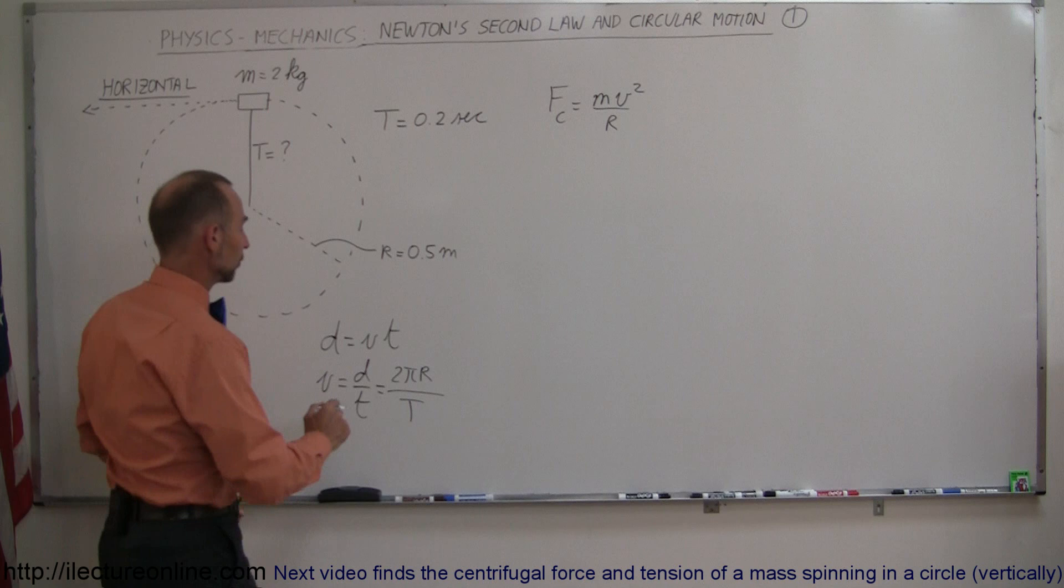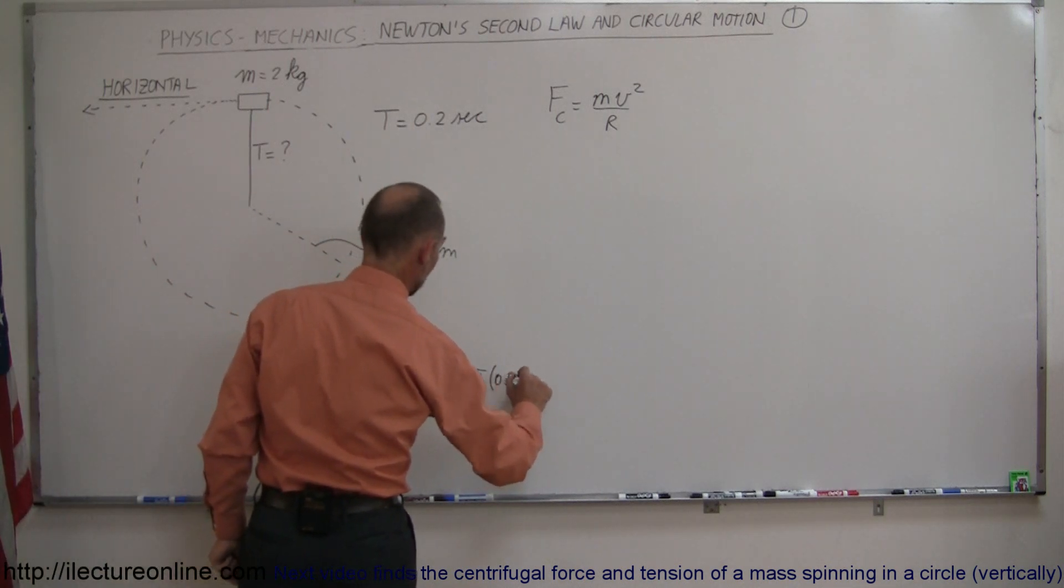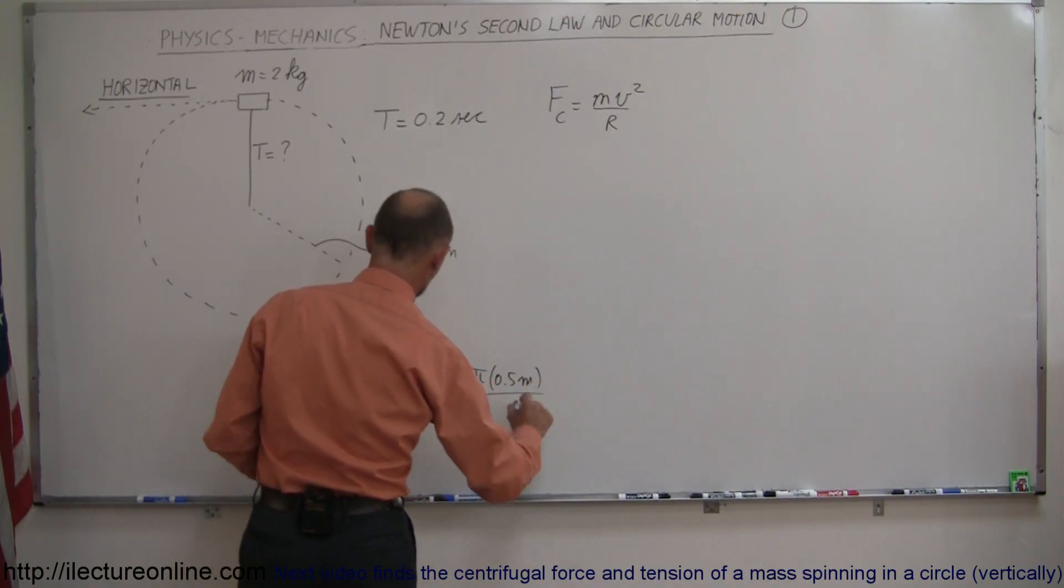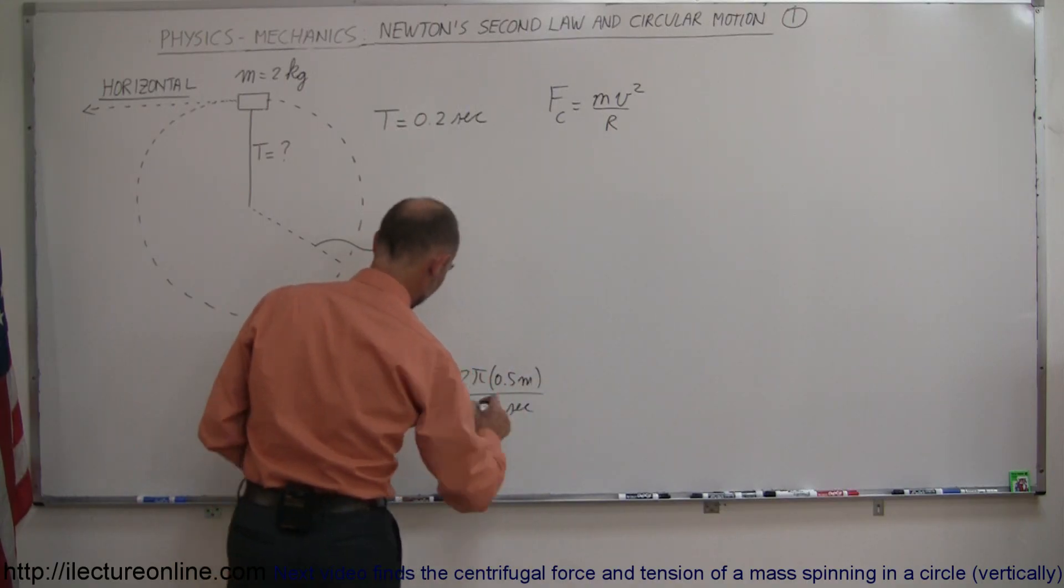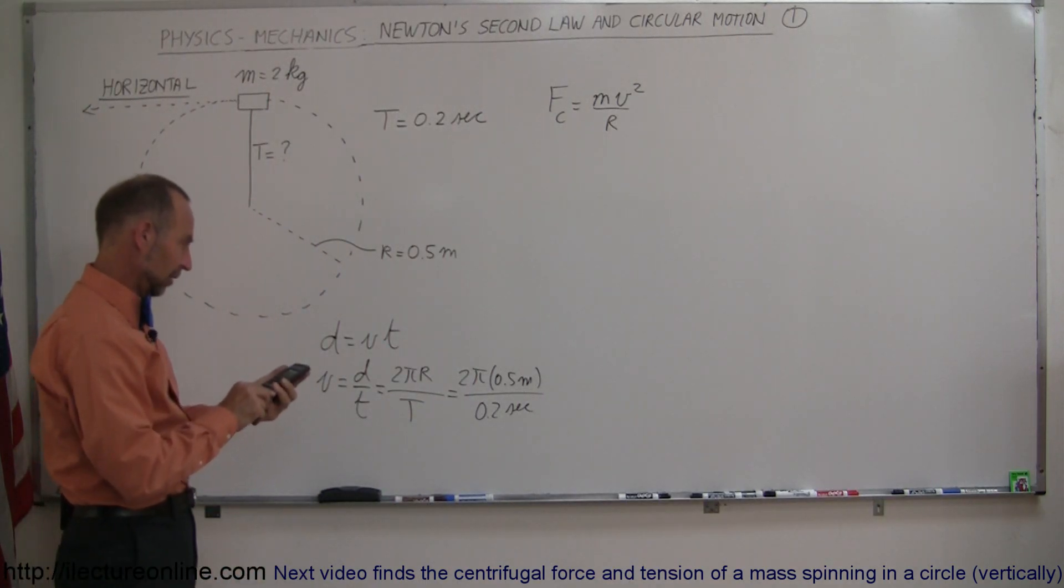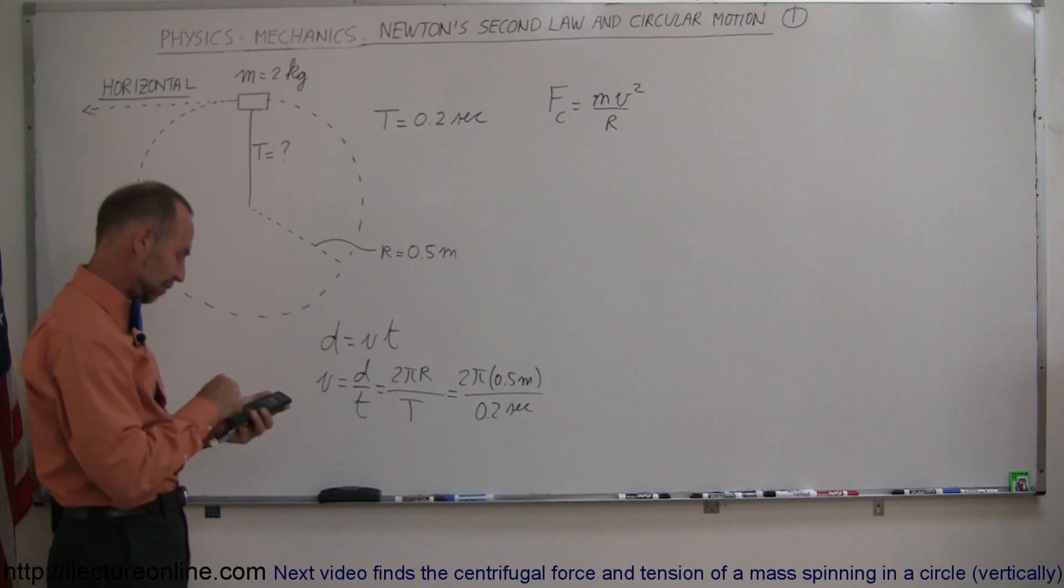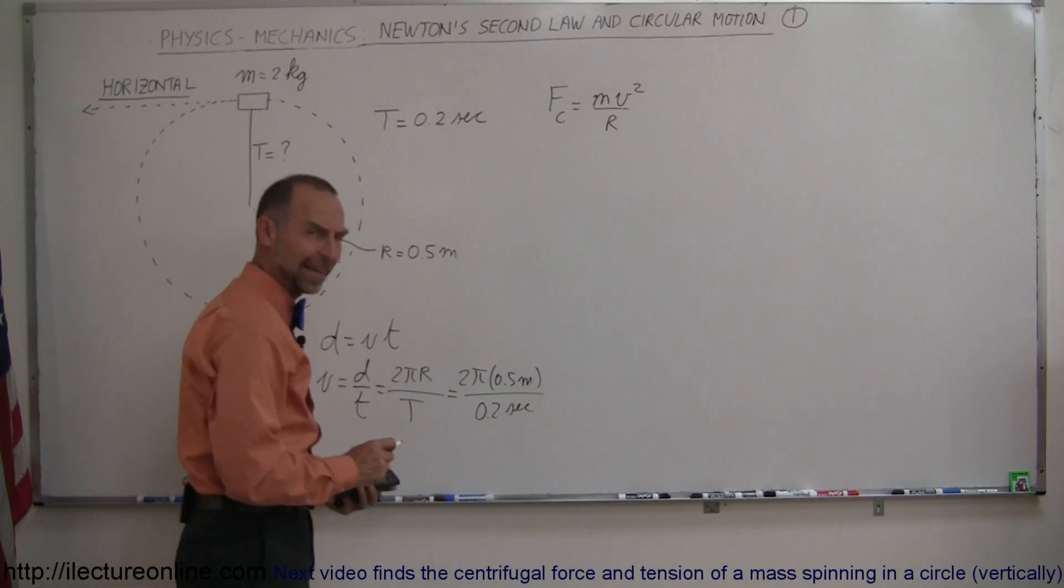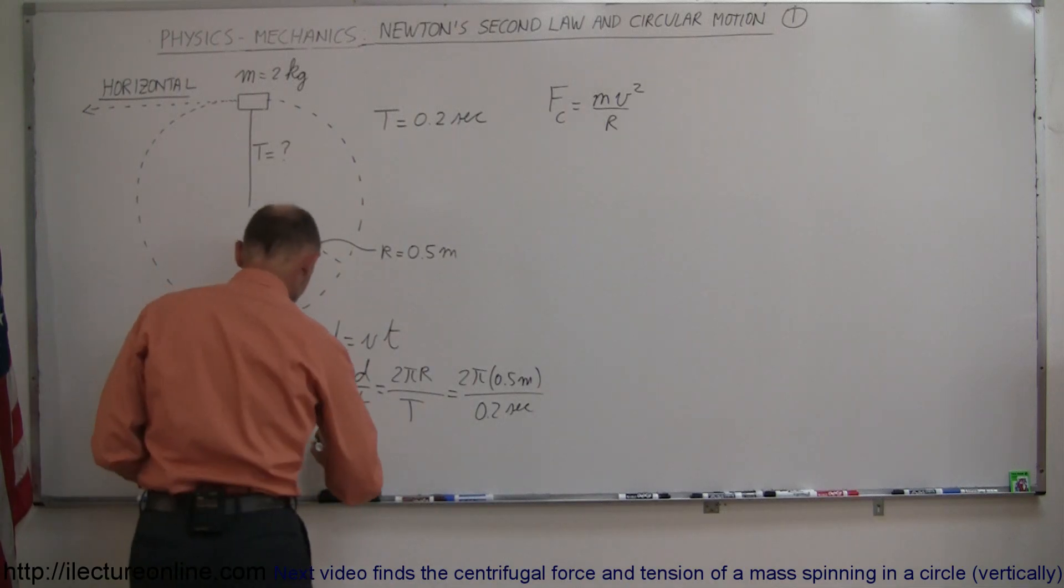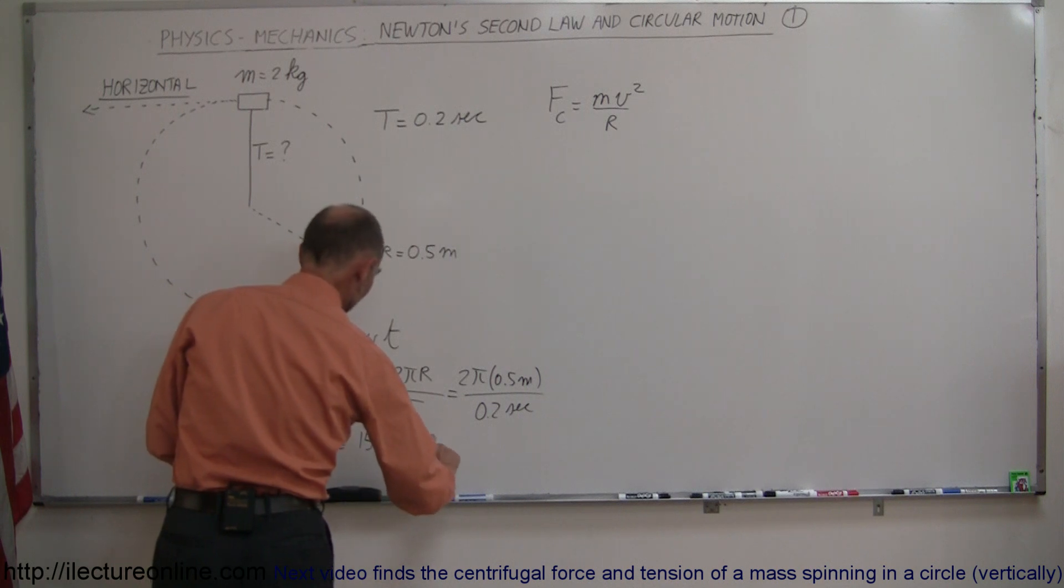Okay, 2 pi r, so that would be equal to 2 times pi times the radius of 0.5 meters, divided by the period of 0.2 seconds. All right, so how fast is that thing going around the circle? So we have 2 divided by 0.2 is 10, times 0.5 is 5, that would be 5 times pi equals 15.7. So I had a little trouble finding the decimal point on my calculator. So V is equal to 15.7 meters per second.